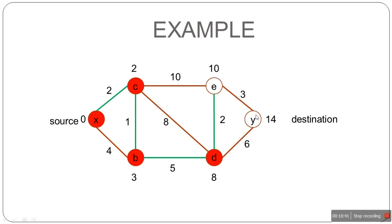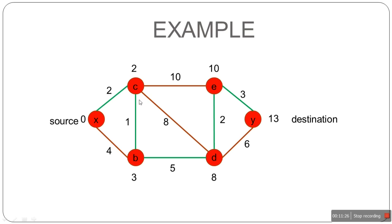We connect the next path step to E. E's only unvisited neighbor is Y. The distance from X to Y via C, B, D, and E is 10 plus 3, which equals 13. Since 13 is less than the current value of 14, we assign 13. All unvisited neighbors of E are processed, so mark E as visited. We have now found the shortest path from X to Y, which is 13: that is 2 + 1 + 5 + 2 + 3 = 13. Mark Y as visited — done.